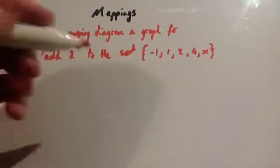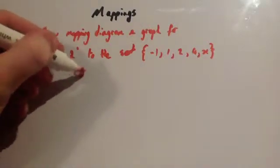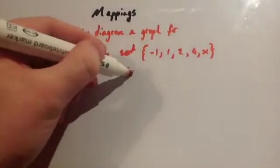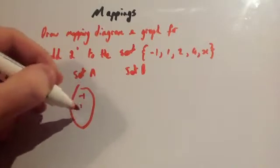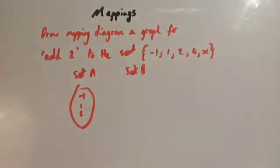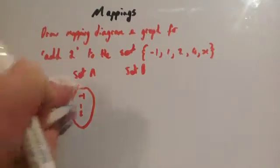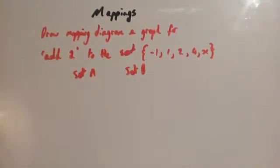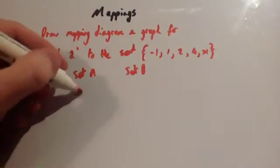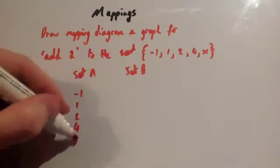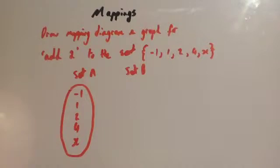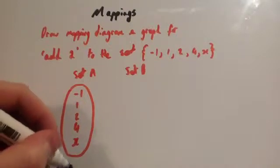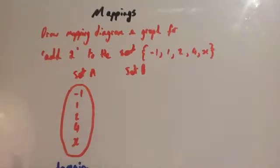Let's start with the mapping diagram. You're going to have Set A and Set B. Set A is a bit like your input — so you've got minus 1, 1, 2, 4, and x — and you draw a bubble around that. Your inputs are called the domain. That's a word you're going to see a lot in C3: domain. It's like your inputs.